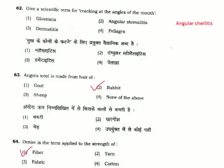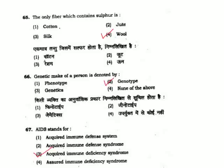Question 62: Scientific term for cracking at angles of the mouth — cracking at angles of the mouth is angular cheilitis, but no option is given here. Question 63: Angora wool is made from the hair of — correct answer is Option 2. Question 64: Denier is a term applied to the strength of fiber. Correct answer is Option 1. Question 65: The only fiber which contains sulfur is wool, a natural fiber.